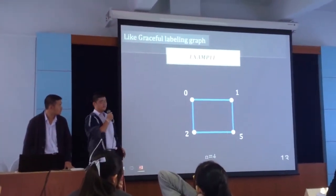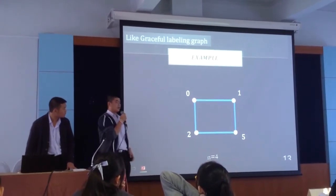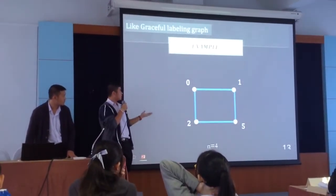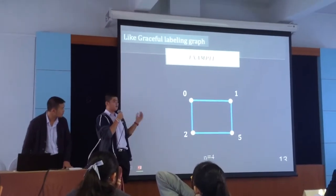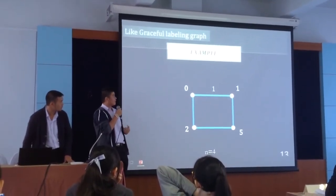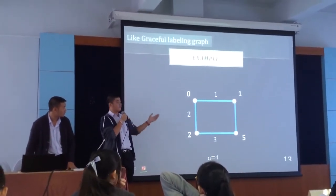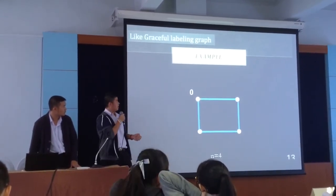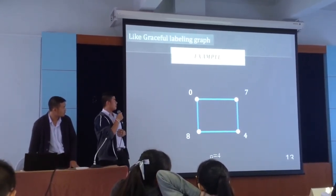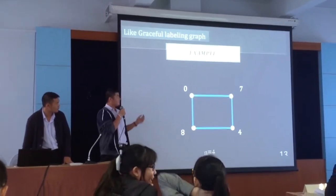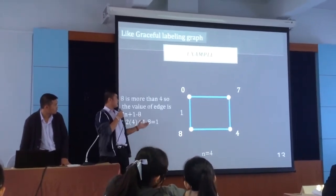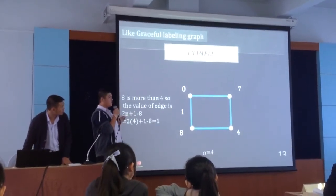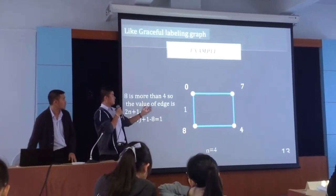This is an example of low labeling graph. If we assign 0, 1, 2, and 5 to the graph with four edges, we will get 1, 2, 3, and 4 that makes a low labeling graph. And this is another example: if we assign 0, 7, 8, and 4, we will get 1 from the other conditions, and also 2, 3, and 4.